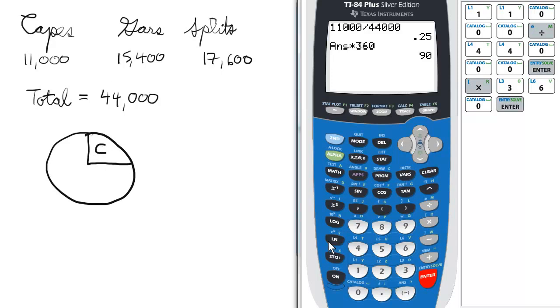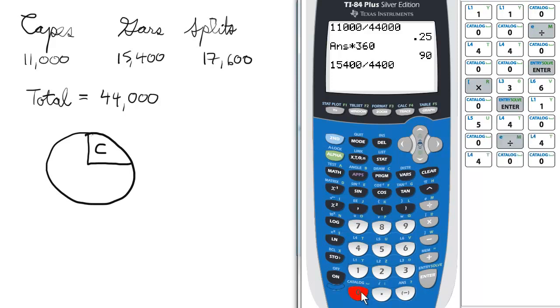For Gars, 15,400, so 15,400 divided by 44,000, enter, 0.35, so that's 35%.